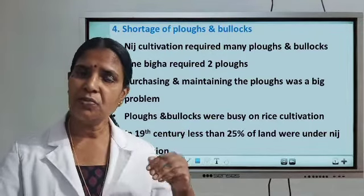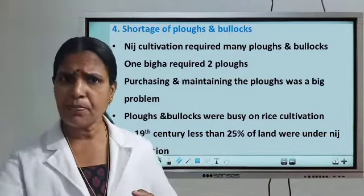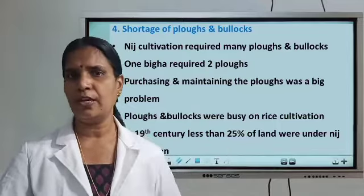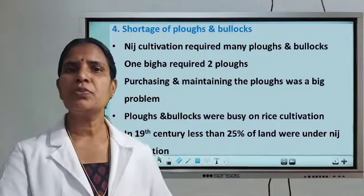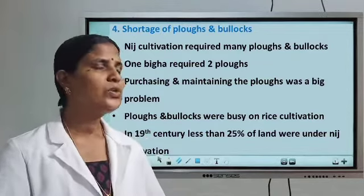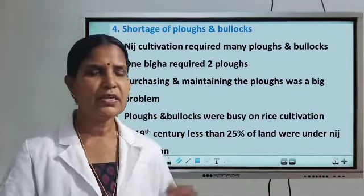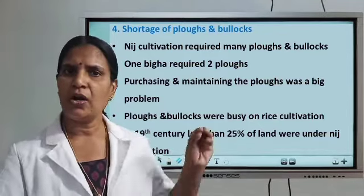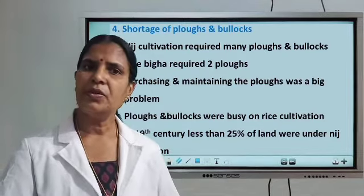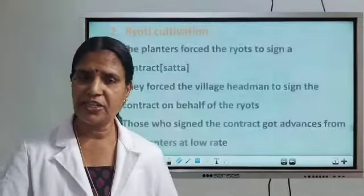Indigo was grown in fertile soil only, but the indigo plant had deep roots and exhausted the fertility of the soil. After cultivating indigo, it was not possible to use the same land for any other crops. So only 25% of the land areas were cultivated under nij cultivation, meaning only 25% of indigo production was done under nij cultivation. They therefore searched for another method and introduced ryot cultivation.